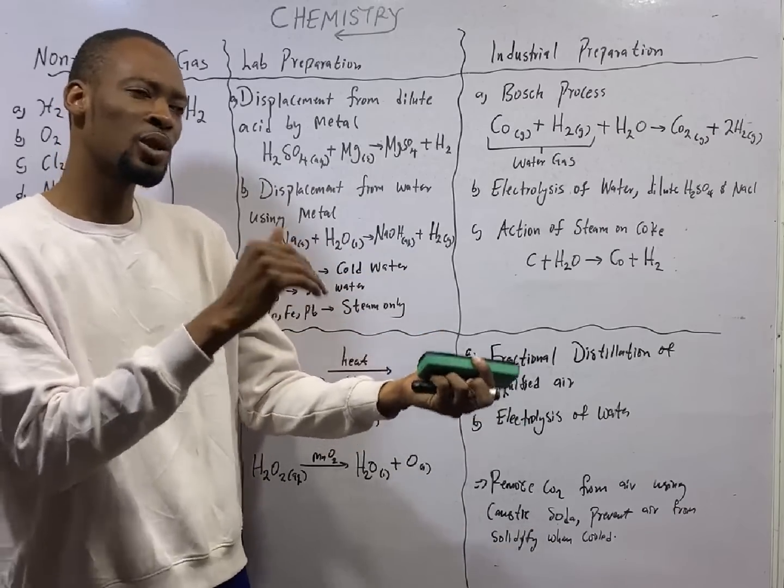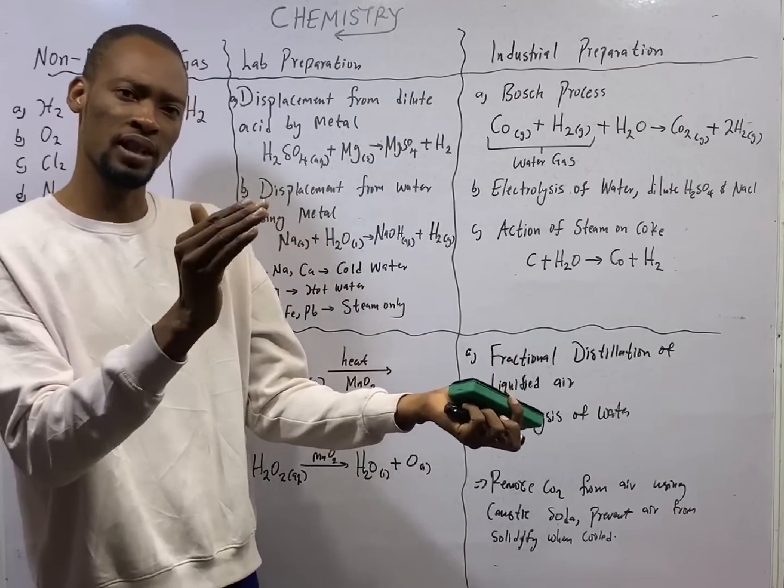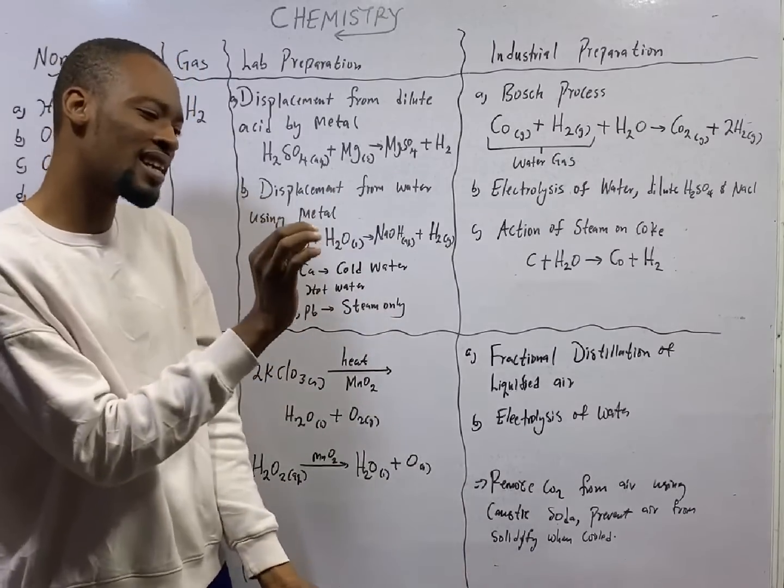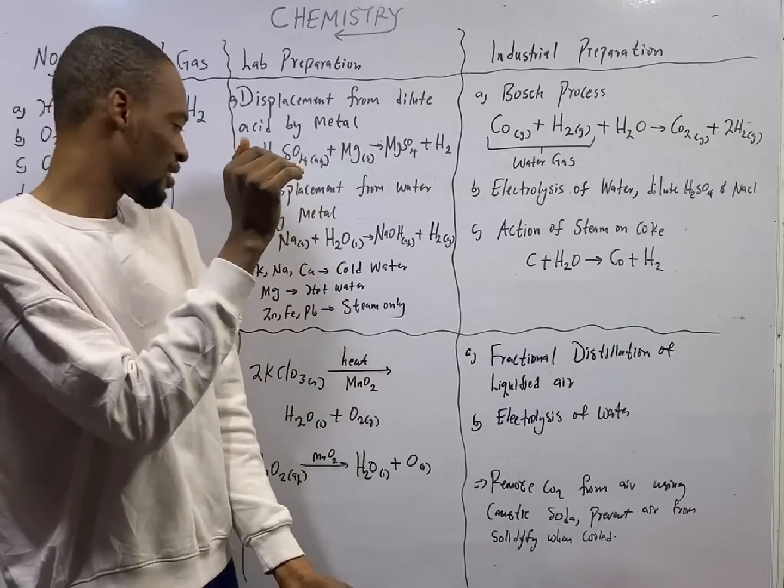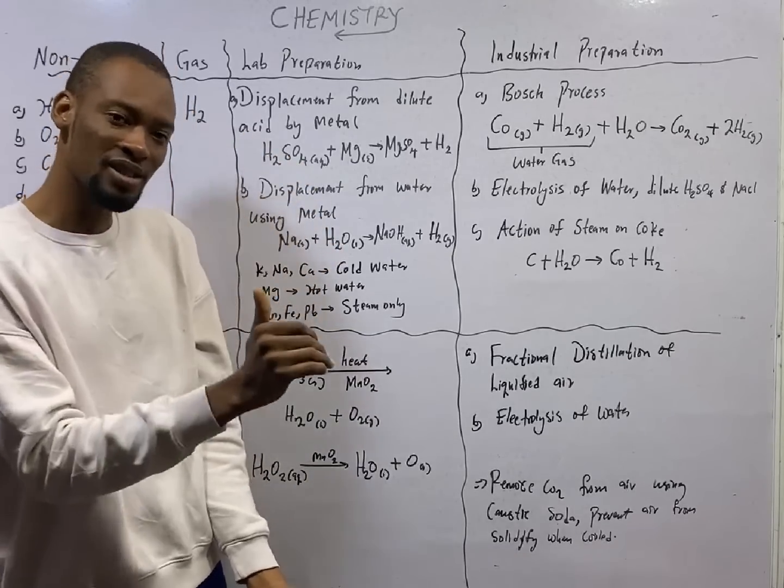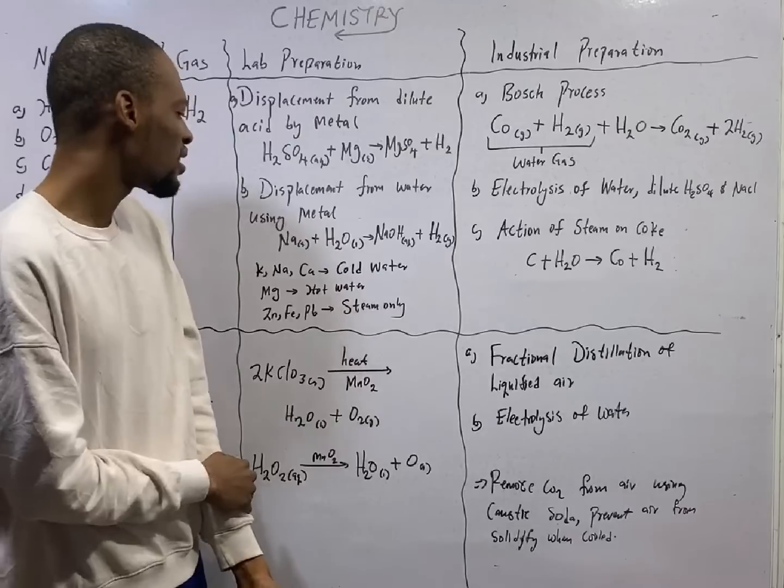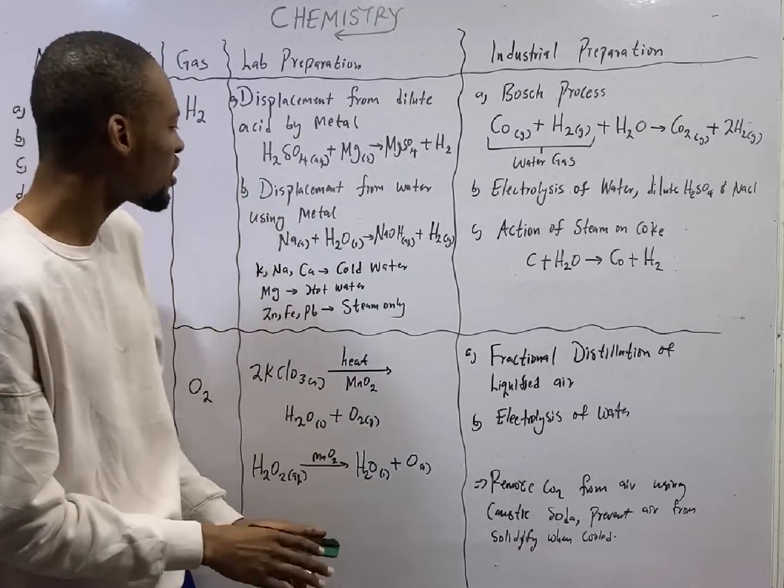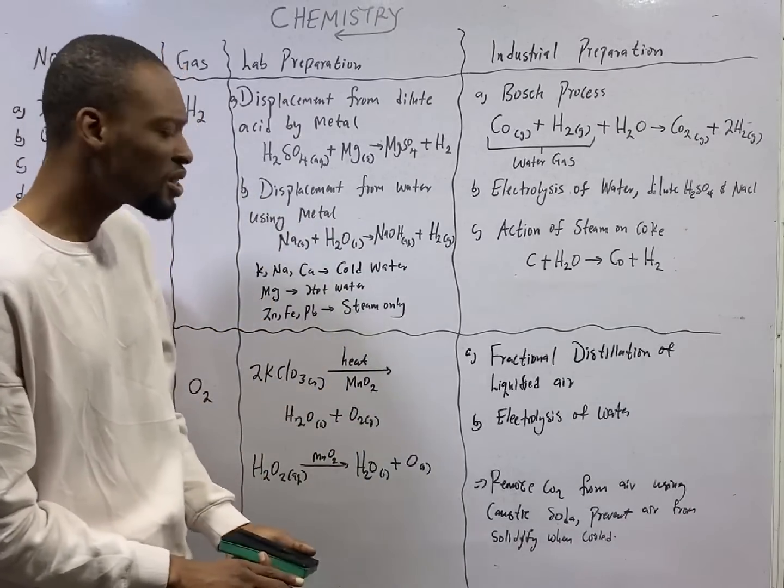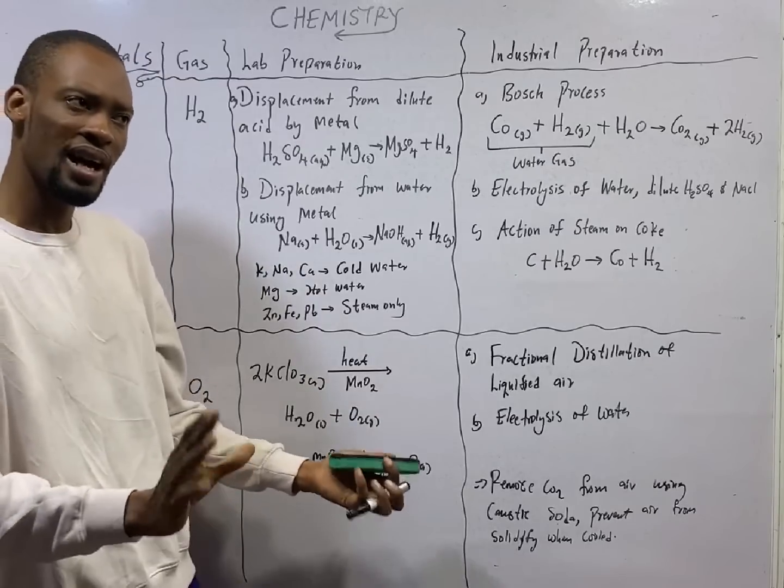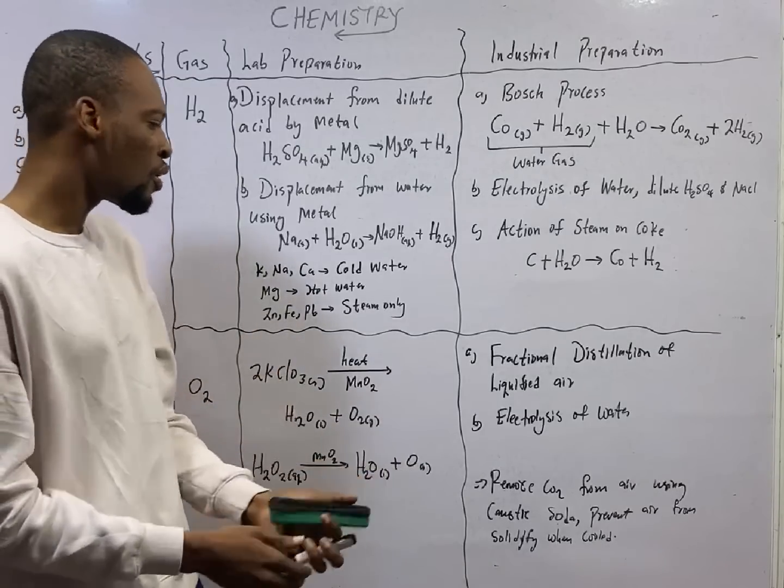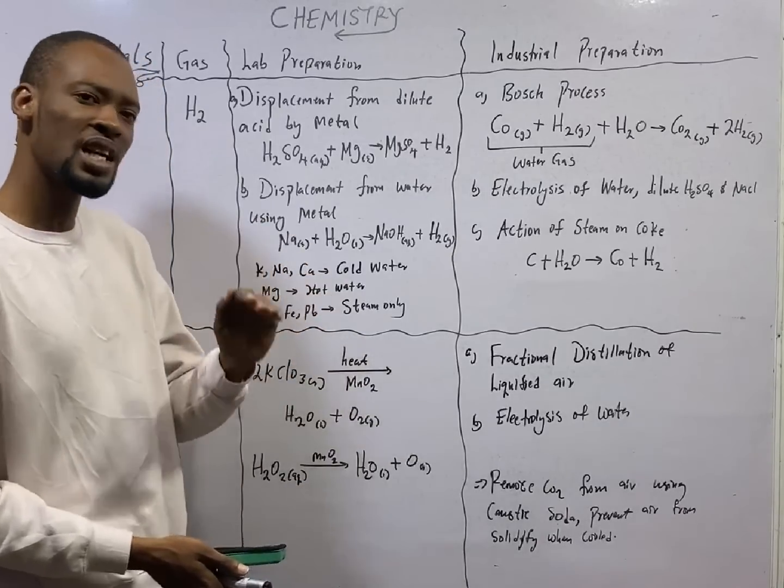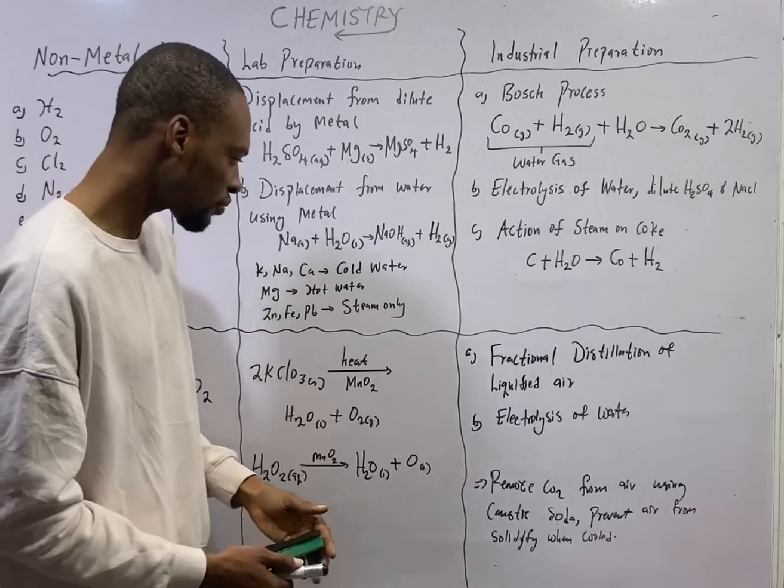But the ones that are lower cannot remove hydrogen from cold water. For example, magnesium can only liberate hydrogen from hot water. So if magnesium reacts with cold water, hydrogen gas will not be displaced. Hydrogen gas will not be produced. But if magnesium reacts with hot water, hydrogen gas will be formed.